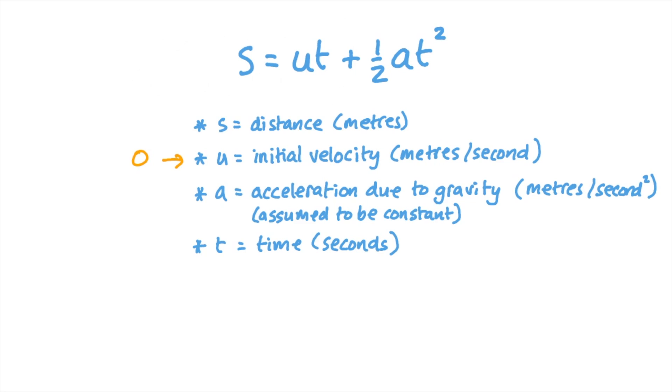The initial velocity of the penny would be zero if we dropped it from rest rather than threw it with a force through the gap, and this would mean that the first term was zero times the time—just zero—so we could ignore it.